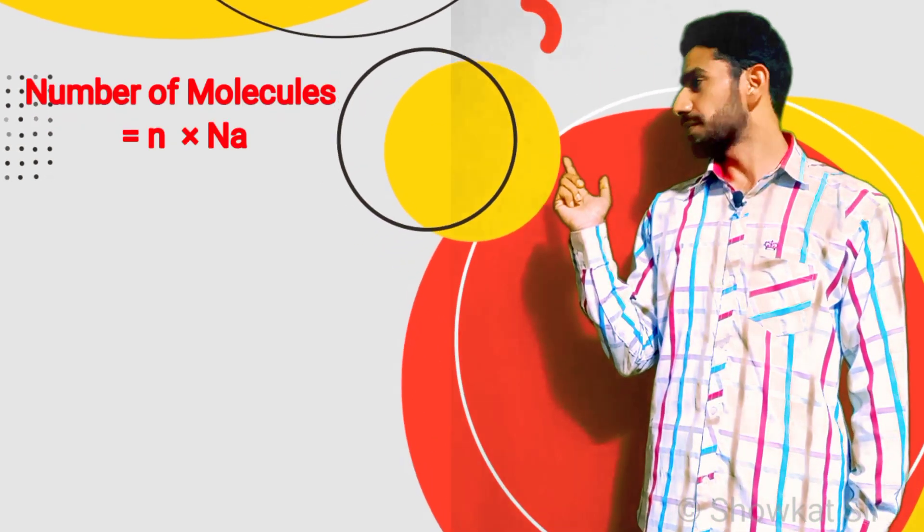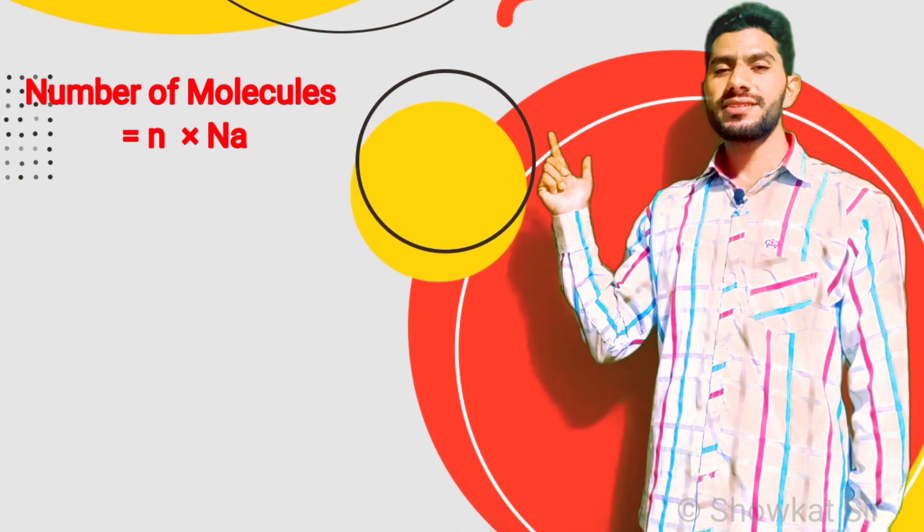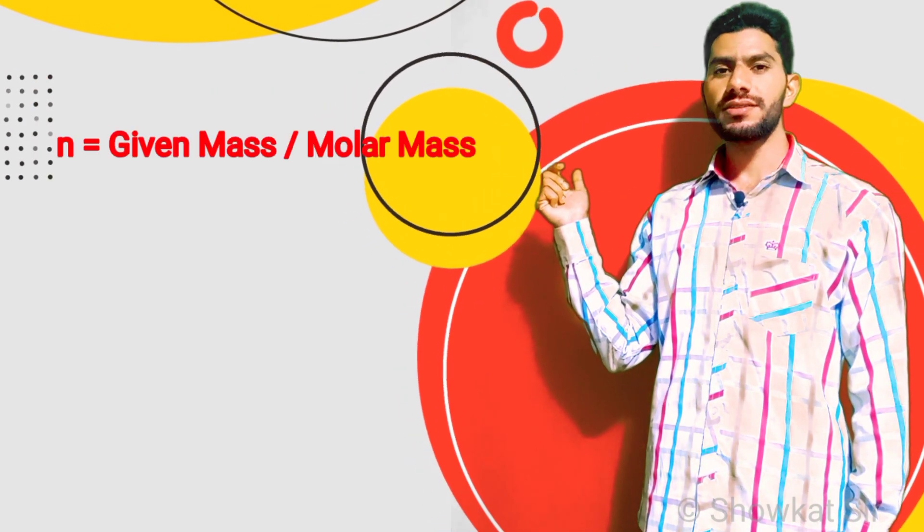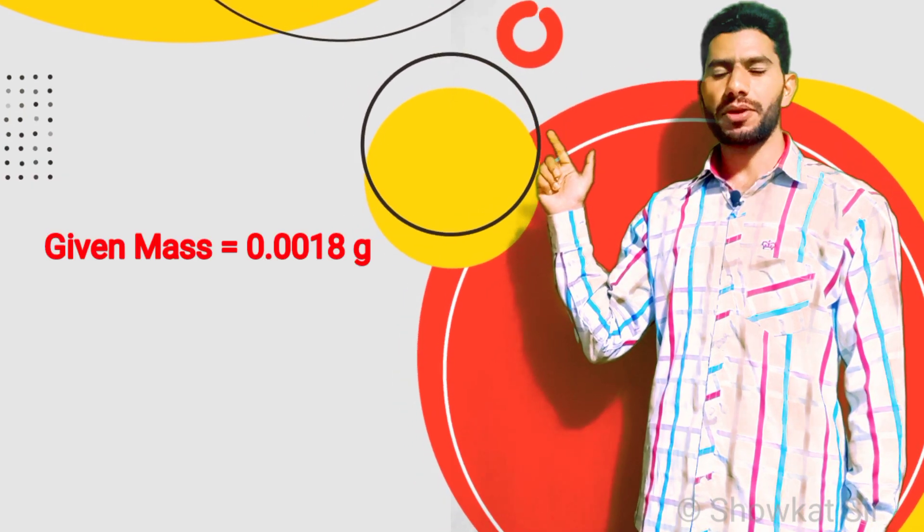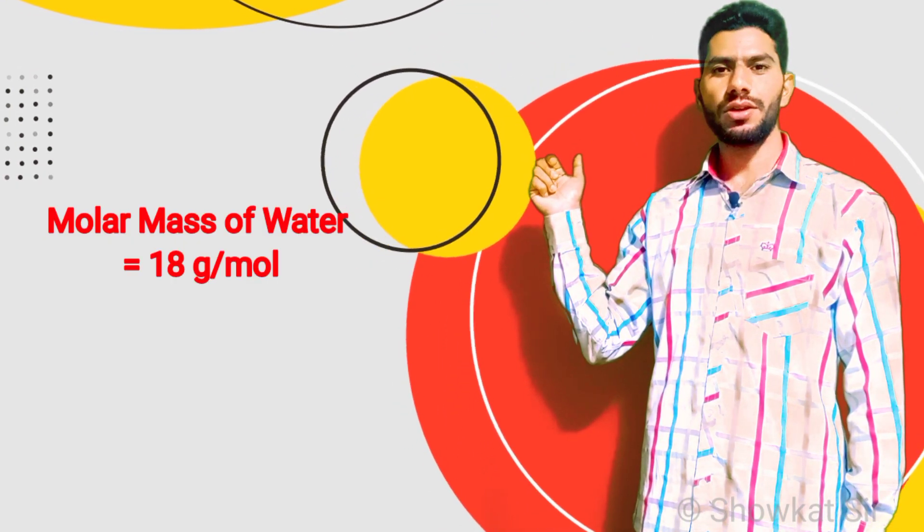So the number of moles will be equal to given mass upon molar mass. Given mass is 0.0018 grams upon molar mass of water, which is 18 grams per mole.